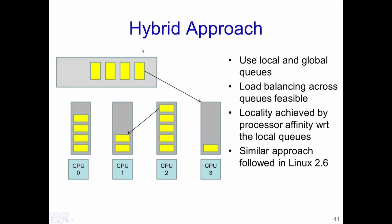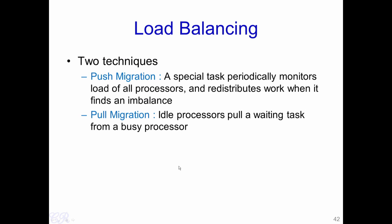A third way to do symmetrical scheduling is a hybrid approach. This approach is used in Linux kernels from 2.6 onwards. Essentially this approach uses both local queues as well as global queues. The local queues are the queues which are associated with each CPU — each CPU has its own local queue — while the global queue is shared among the CPUs. The global queue is used to ensure that load balancing is maintained, ensuring that each CPU would have a fair share of the processes to execute. The local queues ensure locality, and by having them, the performance degradation of the system is minimized. Besides the global queue, there are two more techniques to achieve load balancing.